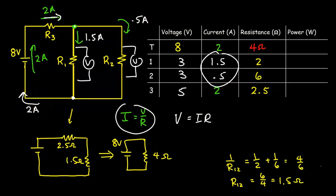For the power, we're just going to use our P equals IV equation. So 2 times 8, we get 16. 1.5 times 3, we get 4.5. 0.5 times 3, we get 1.5. And 2 times 5, we get 10.